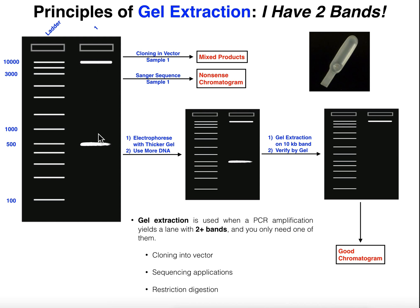If you wanted to directly sequence this, you've got two DNA sequences here — two different ones — so when you sequence it by the Sanger method, which is usually what you do, you're going to get a nonsense chromatogram because you're sequencing two different genes. The segments may overlap and it's going to produce unreadable results. And if you wanted to do restriction digestion, again you've got a mixture of products. So if any of these things — cloning, sequencing, or restriction digest — are in the future of your experiment, you generally want to do a gel extraction.